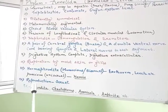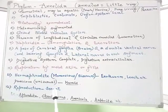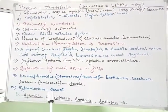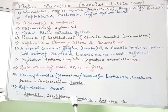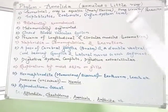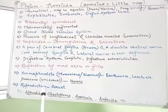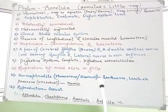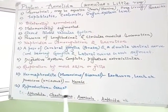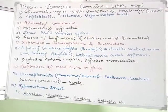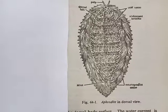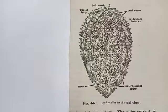Reproduction is sexual, taking place by the formation of gametes. Examples include earthworm, leeches, Nereis, and Aphrodite, which is also called the sea mouse.